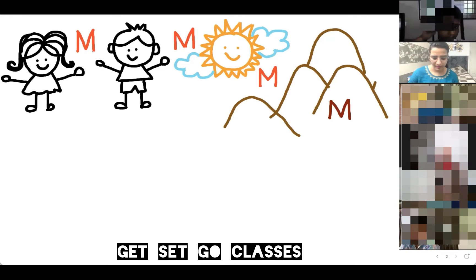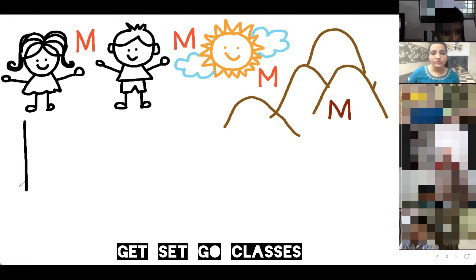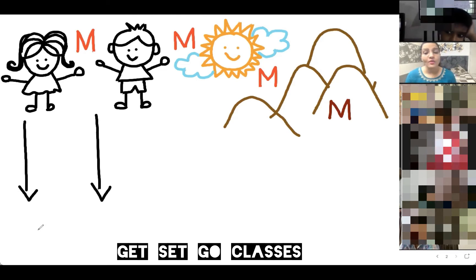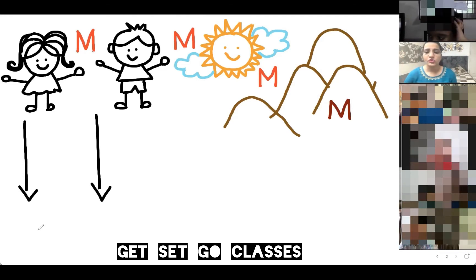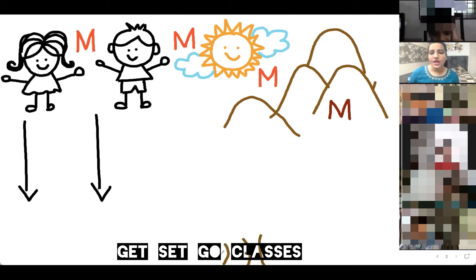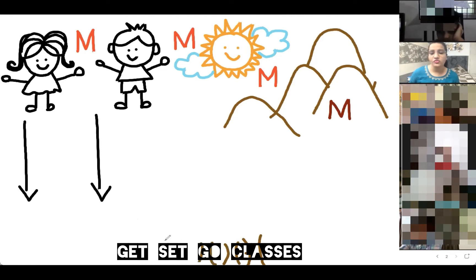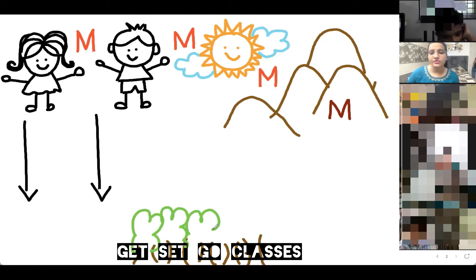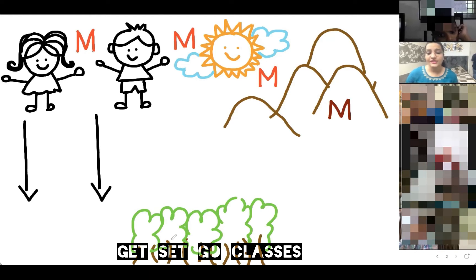Aira is marching — very good! They are marching to the mountains and walking outside. Now they saw that to go to the mountains, they have to go through a forest. What is in the forest? Lots of trees and animals. They have to cross the forest to go to the mountains. Let's go — let's cross the forest!